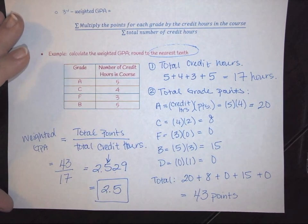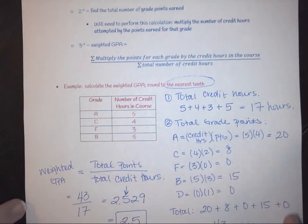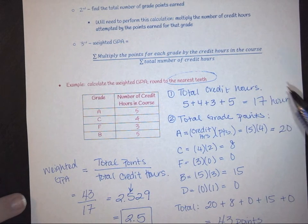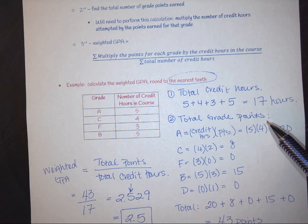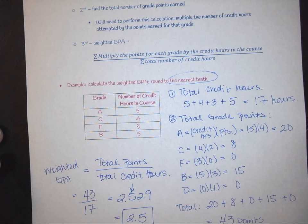And that is your response or your GPA. To recap, remember all you need to do is you need to find your total credit hours, you need to find the total possible points that were earned, you divide those two, and that gives you a weighted GPA. If you have any questions, please let me know.